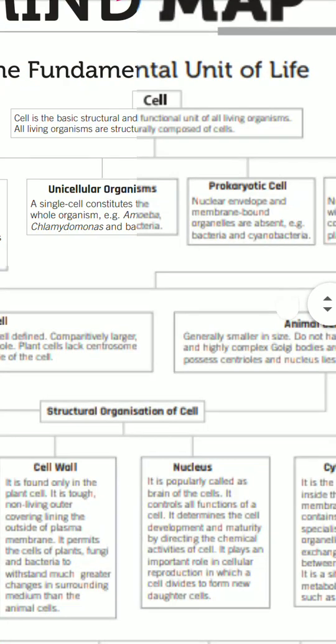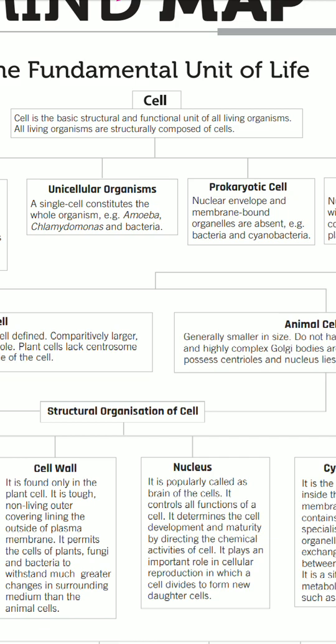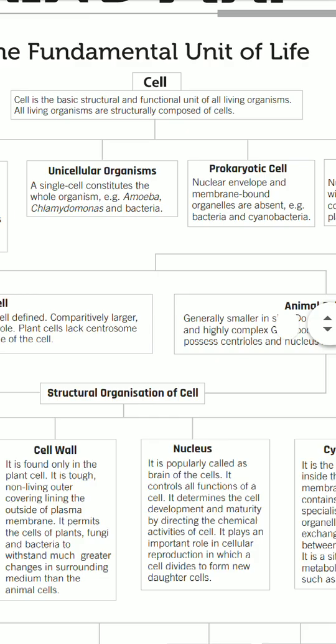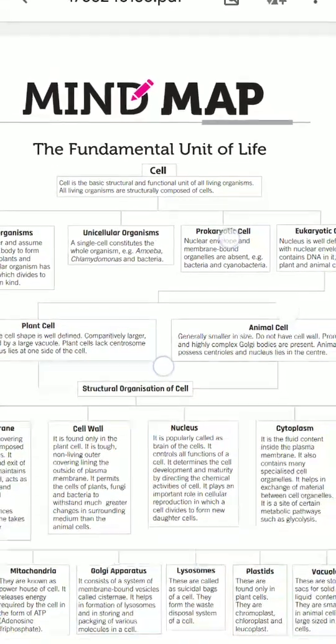Cell is the basic structural and functional unit of all living organisms. Whatever living organisms are present on the earth - whether bacteria, algae, fungus, plants, or animals - the basic structural and functional unit is the cell. All living organisms are structurally composed of cells. For example, one house is built up using bricks; in the same way, the structural unit of living organisms is the cell.